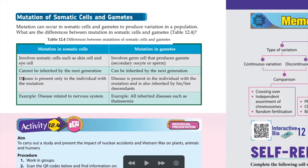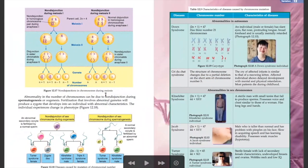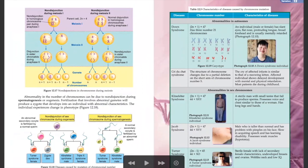For somatic cell mutation, the disease is present only in the individual with the mutation. For germ cell mutation, the disease is present in the individual and can be inherited by their offspring. Examples of germ cell mutation diseases include nervous system diseases and inherited diseases such as thalassemia. That's all for today — I hope you fully understand. Once you finish watching this video, please complete the exercise given through Telegram. Next class we will discuss it. Assalamualaikum, bye bye.